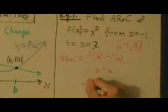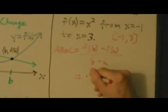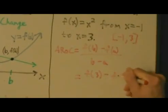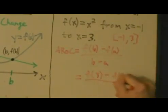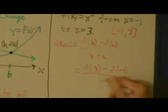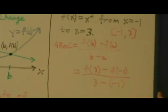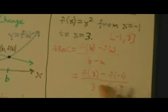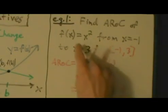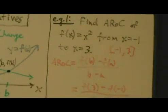So this average rate of change equals f of 3 minus f of negative 1 all divided by b minus a, which is 3 minus negative 1. All right, so now we just have to know what's f of 3 and what's f of negative 1. Well, we go back up to our function here, f of x, it's x squared.